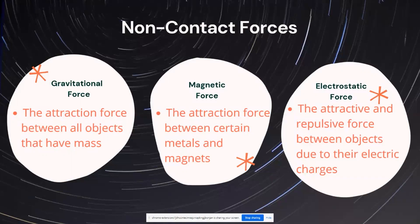Magnetic force is the attraction force between certain metals and magnets. And then we're also going to look at electrostatic force, the attraction and repulsive force. That means it pushes away between objects due to their electrical charges. So all these forces have some way influences objects around them.